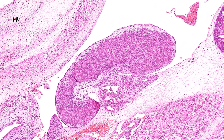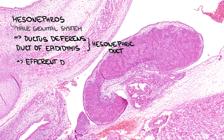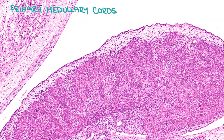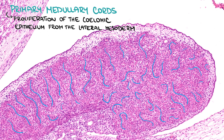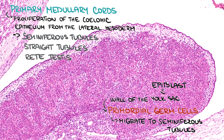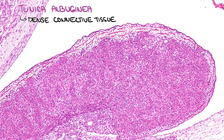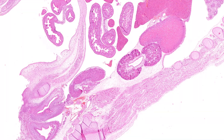The mesonephros also gives rise to a part of the male genital system, specifically ductus deferens and duct of epididymis — which arise from the mesonephric duct — and efferent ductules of the testis forming from the mesonephric tubules. The primary medullary cords, formed by proliferation of the superficial epithelium from the lateral mesoderm, give rise to the convoluted seminiferous tubules, straight tubules, and rete testis. The primordial germ cells from the wall of the yolk sac, which got there from the epiblast, migrate to the seminiferous tubules and develop into germ cells that can be found there. The primary medullary cords lose contact with the superficial epithelium and tunica albuginea — a layer of future thick, dense collagen connective tissue covering the gonad.